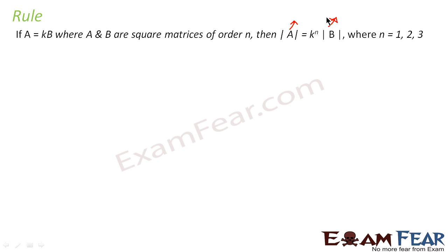Let me repeat this rule. It says that if there are two matrices where matrix A is equal to some constant k times matrix B, where both A and B are square matrices of order n — whether 2×2, 3×3, 4×4, or 1×1 — then the determinant of matrix A is nothing but k to the power n into the determinant of matrix B.